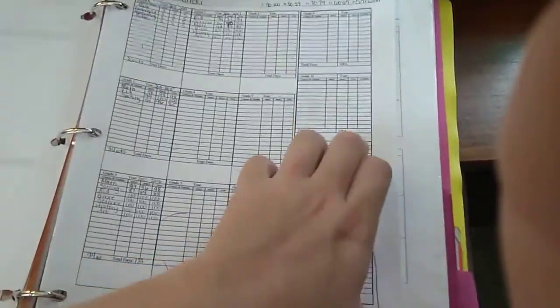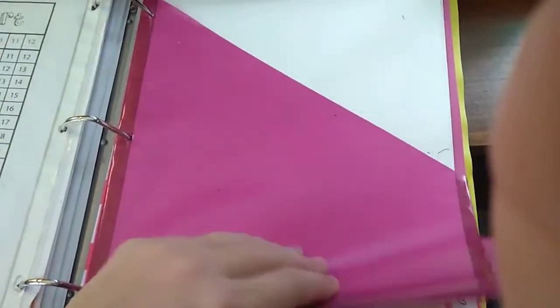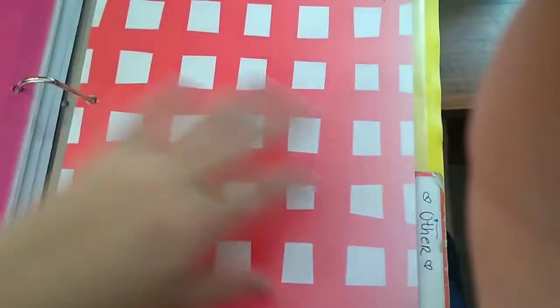This is an extra tab where I keep some blank paper. That's the spot for lined paper, but I don't have any left.